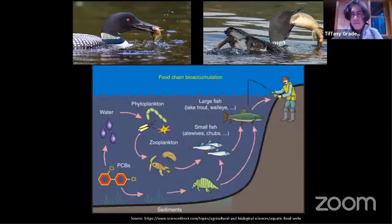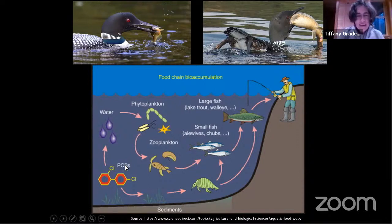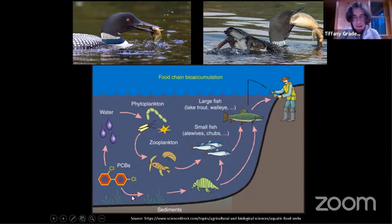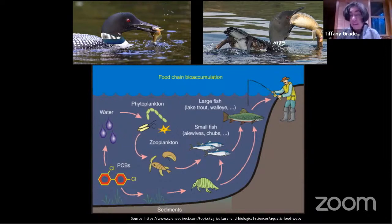Let's do a quick food web review. This schematic uses PCBs as an example. PCBs go into a lake ecosystem — into the water and into the sediment. Bacteria in the water and sediments absorb those contaminants. These bacteria are eaten by plankton — phytoplankton and zooplankton — and then up the chain it goes. Plankton are eaten by aquatic insects, those insects are eaten by crayfish, which also feed directly in the sediments.